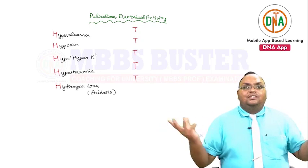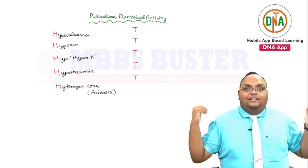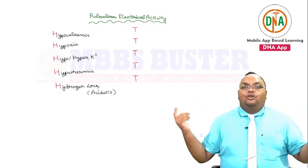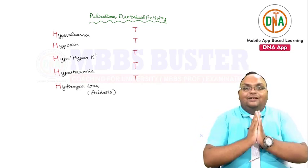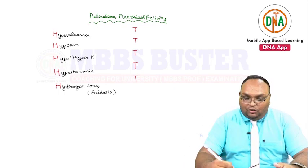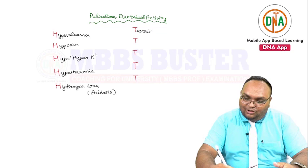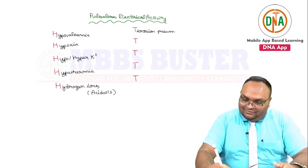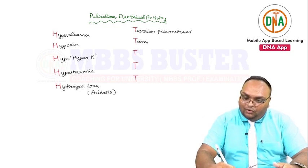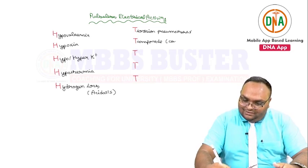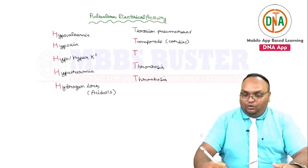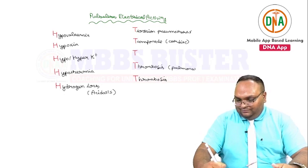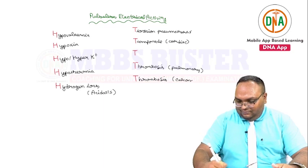The third T is toxins — toxic people in your life. So the first T: lot of tension or pressure — if the tension is from your lungs, you call that tension pneumothorax; if the tension is on your heart, you call that cardiac tamponade. Then you have thrombosis — any blockage, which could be in the pulmonary circuit or the coronary circuit. And then you have toxins.